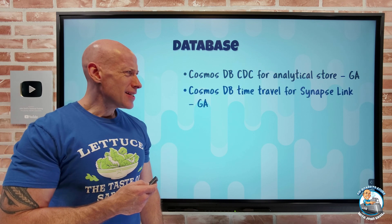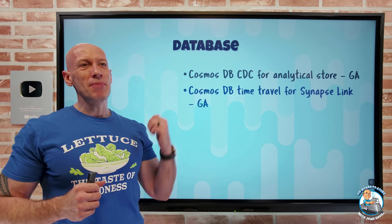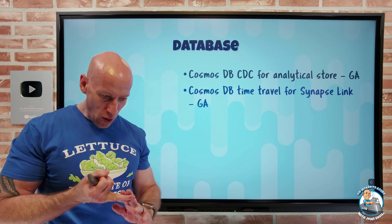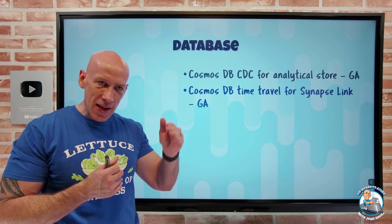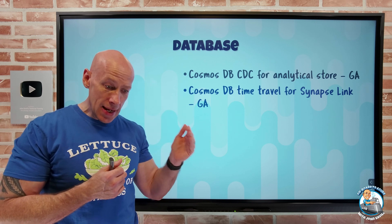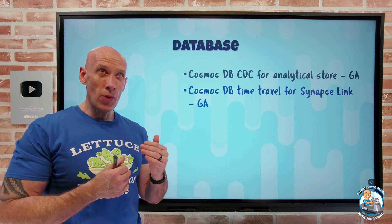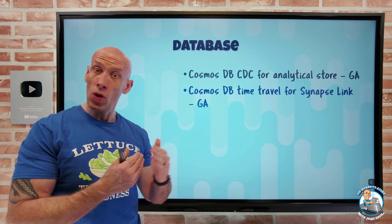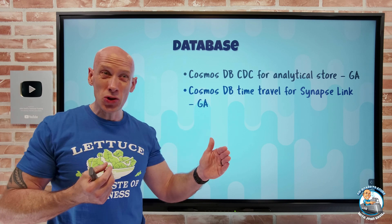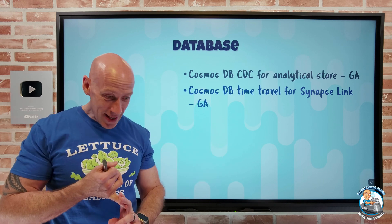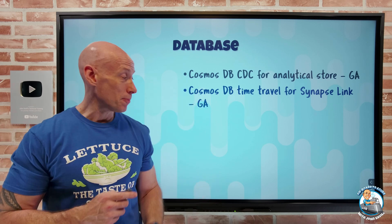Cosmos DB now has time travel for Synapse Link. For both the NoSQL and MongoDB APIs, you can go back to a specific point in time and see what the analytical store looked like. This is useful for comparing two points in time, investigating logical data corruption, data auditing, trend analysis, or fixing issues. That feature is now GA.